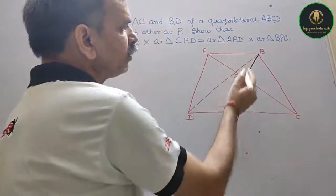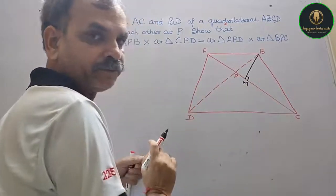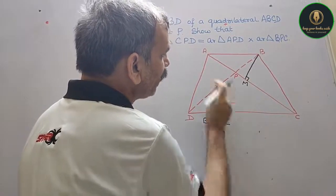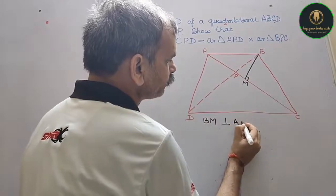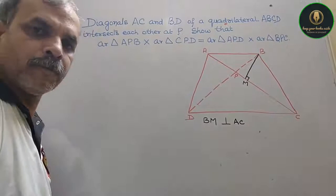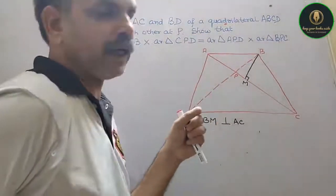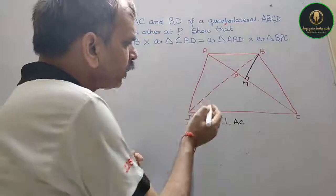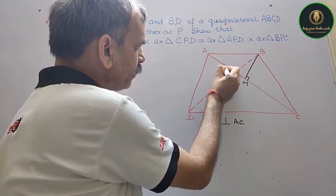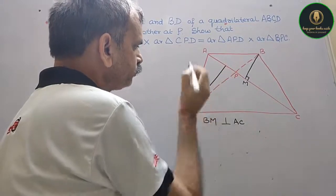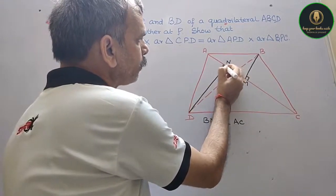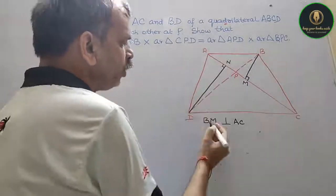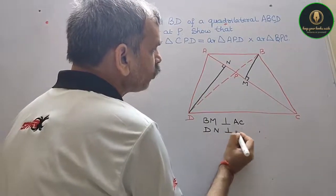For the area of a triangle, height is always perpendicular to the base. So as construction, we draw BM perpendicular to AC — this is your height, and this point is M. Similarly, DN is perpendicular to AC — this is your other height, and this point is N.